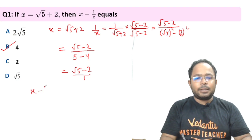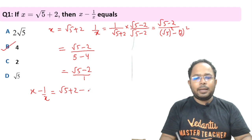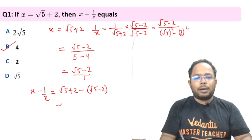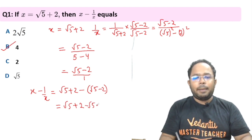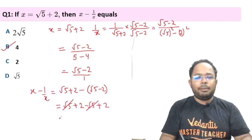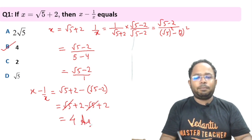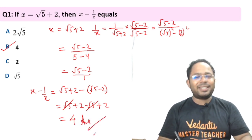Now x minus 1/x: we have (√5 + 2) minus (√5 − 2). The √5 terms cancel, and ultimately we get the answer 4. Very good students!